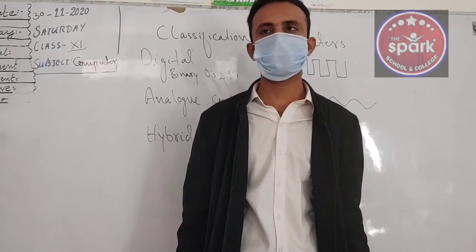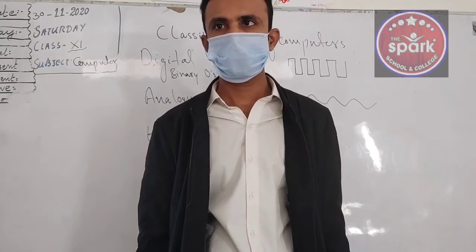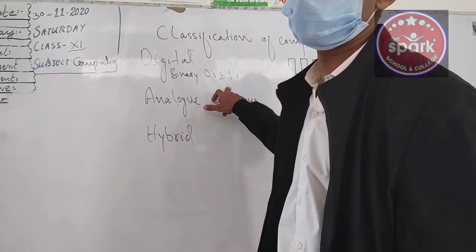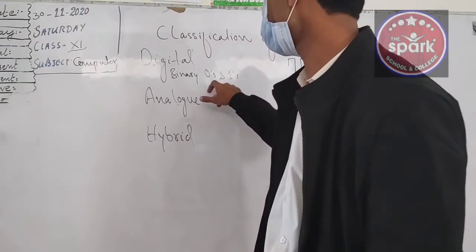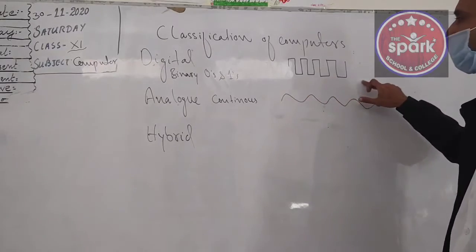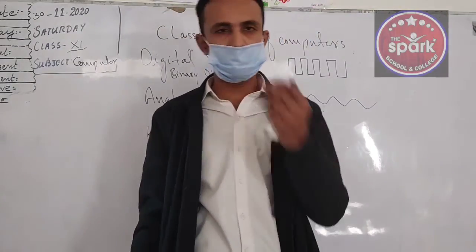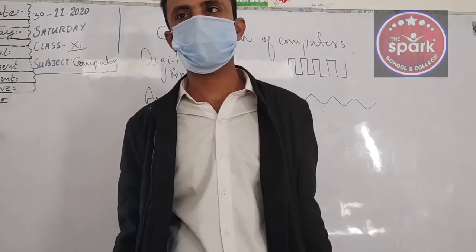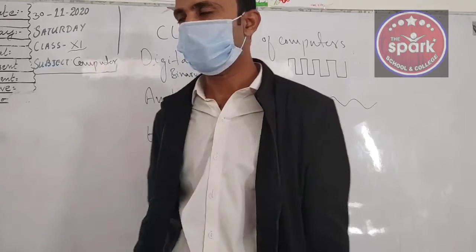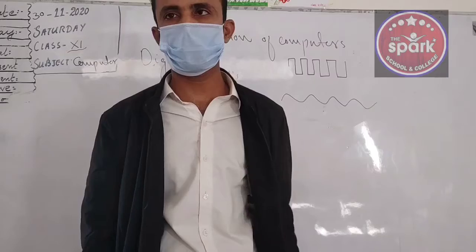Commonly, we all are using digital computers because they process data through the binary method — 0s and 1s are applied. They are calculated across this method and the signals are straight. Whenever we calculate anything, the result always comes at a fixed point; it never changes.